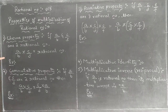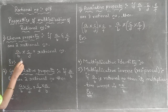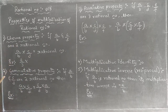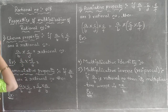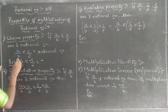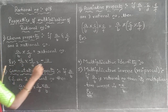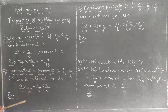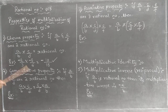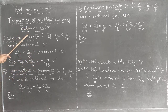Let me take one example to show closure property. Let me take one rational number 2/3 and another rational number minus 5/6. Now let me multiply these two. There is a minus so we use integer rules: plus into minus is minus. 2 × 5 = 10, 3 × 6 = 18. So the result is minus 10/18, which is indeed a rational number. So if I take any two rational numbers and multiply them, the product is again a rational number. Multiplication of rational numbers satisfies closure property.